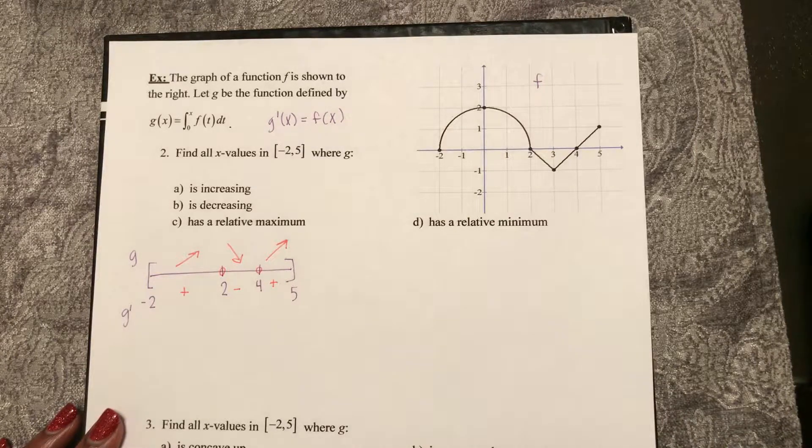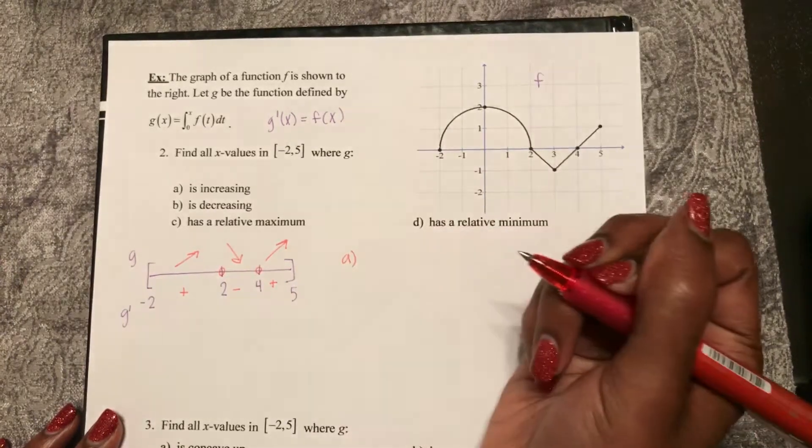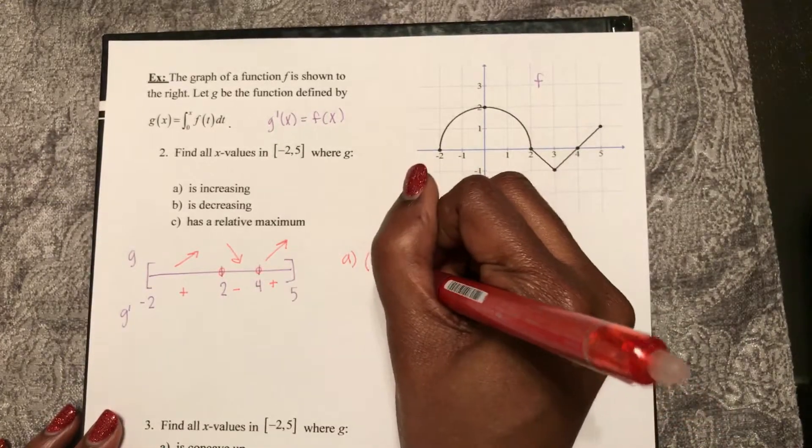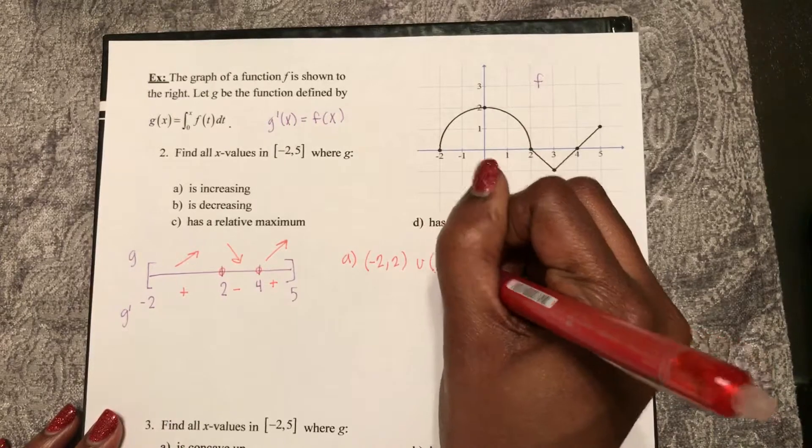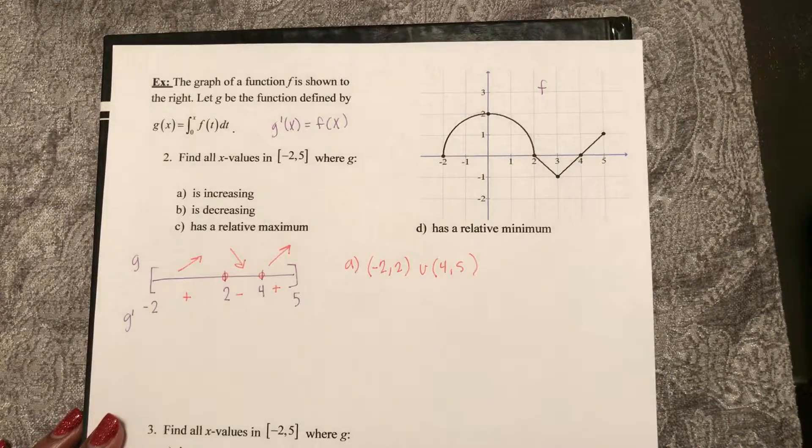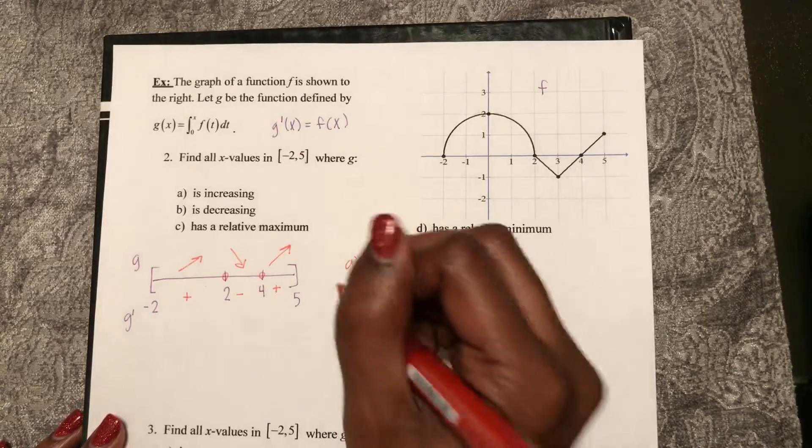So for part A, I know my function is increasing in open intervals from negative 2 to 2, union 4 to 5. Notice I did not ask to justify your reasoning, so we can just write our answers.